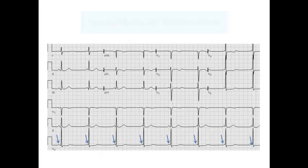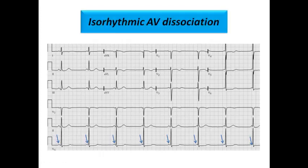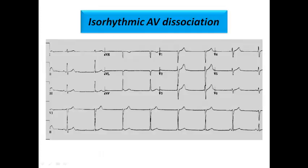This is called isorhythmic AV dissociation. In another ECG example, we can see the same pattern: the P-wave sometimes comes before the complex — as shown by the arrow in the first beat — and in the next beat it slightly appears after the complex. The same pattern continues in the third and fourth beats.